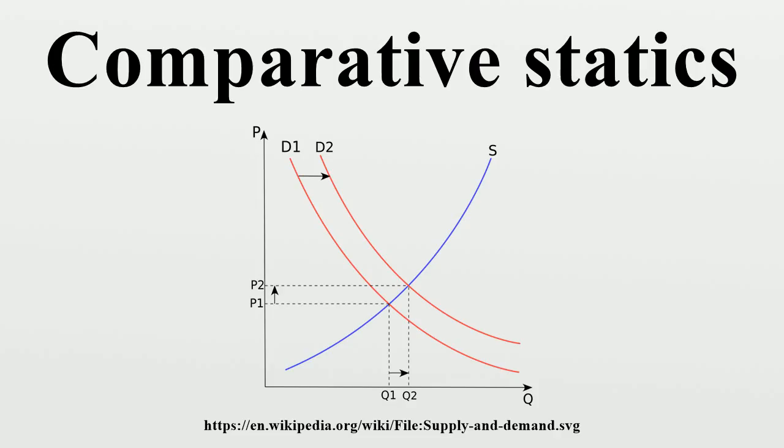Comparative statics without constraints: suppose as a smooth and strictly concave objective function where X is a vector of N endogenous variables and Q is a vector of M exogenous parameters. Consider the unconstrained optimization problem.